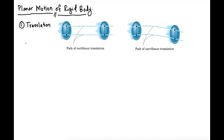The first type is known as translation, and there are two types of translation. The first is called rectilinear translation, where the motion of the rigid body is in a straight line. For translation, if there are two points on the rigid body — point A and point B — as the rigid body translates from one position to another, the path of point A and point B remains parallel. For rectilinear translation, this means the path is a straight line.